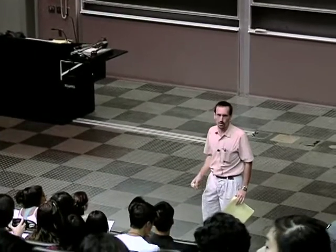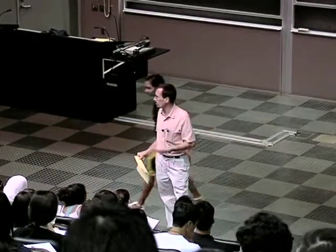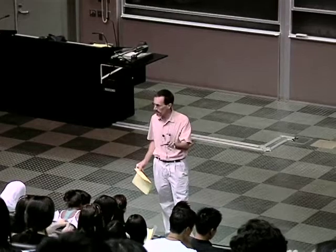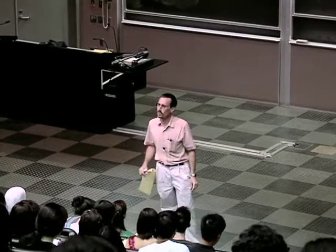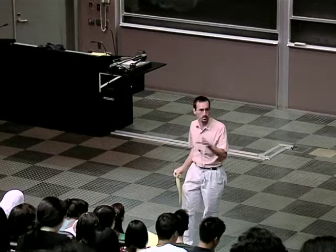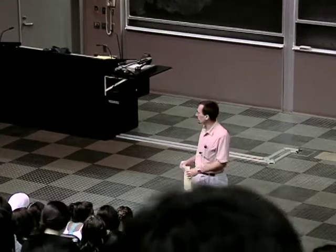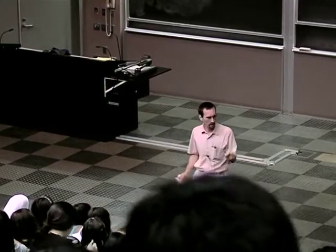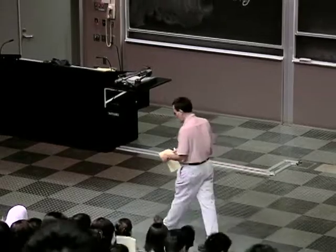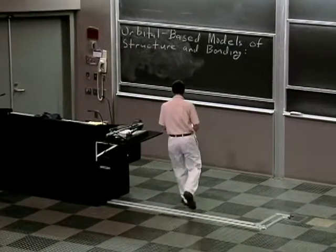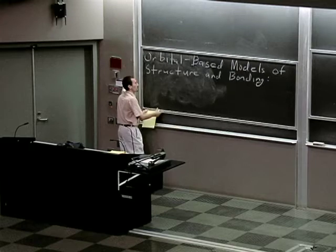Up until this point, we've been thinking of bonds as simply shared pairs of electrons between atoms. This is a very good model of structure — it works very nicely and is easy for us to quickly generate structures. Today, we're going to take a slightly deeper look at structure and bonding, and we're going to look at orbital-based models of structure and bonding. The idea is that bonding occurs because of the greater stability of electrons in molecular orbitals.